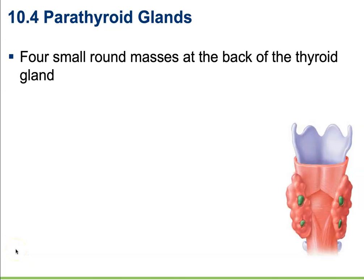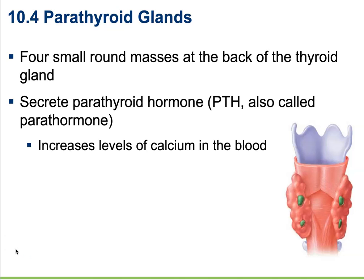Next up we're going to look at the parathyroid gland. The parathyroid gland is four small round masses at the back of the thyroid gland. They're primarily responsible for secreting parathyroid hormone, also called parathormone. This is ultimately responsible for increasing levels of calcium in the blood.